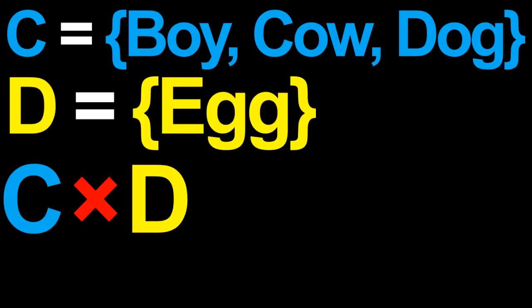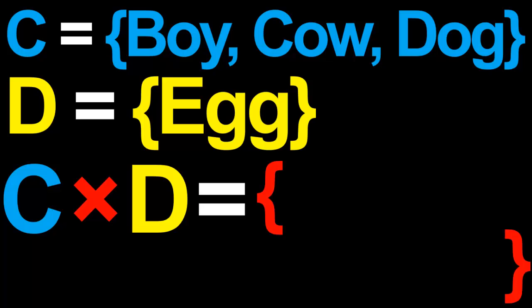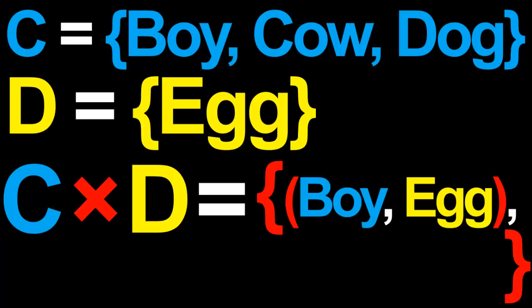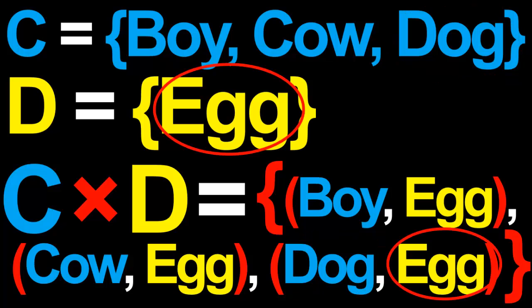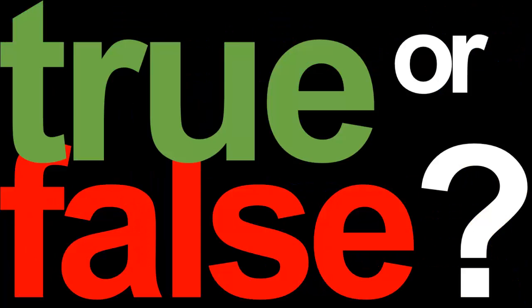Let's try another example. Suppose the set C consists of the elements boy, cow, and dog, and the set D consists of the single element egg. Then the Cartesian product of C and D is a set which consists of three ordered pairs, namely: boy-egg, cow-egg, and dog-egg.